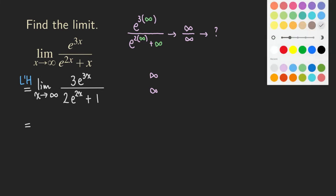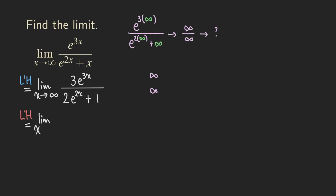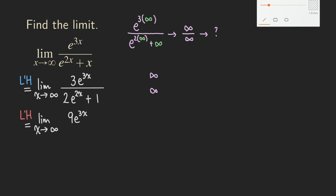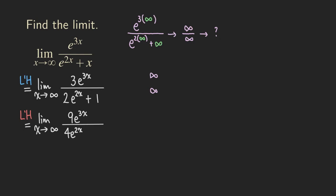Applying L'Hôpital's rule a second time: differentiating 3e to the 3x gives 9e to the 3x, since the chain rule brings down another factor of 3. For the denominator, differentiating 2e to the 2x gives 4e to the 2x, and the constant 1 differentiates to zero and disappears. So we now have the limit as x approaches infinity of 9e to the 3x over 4e to the 2x.